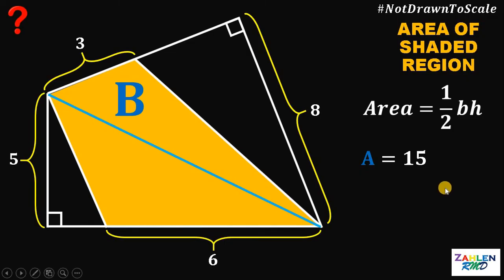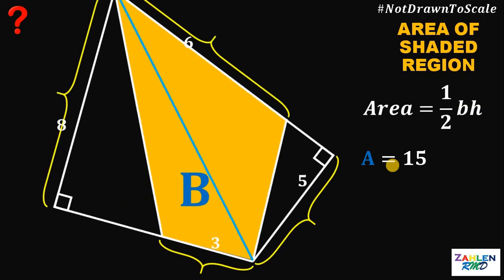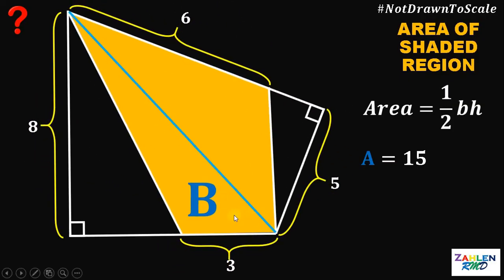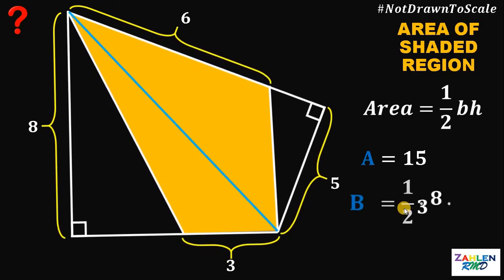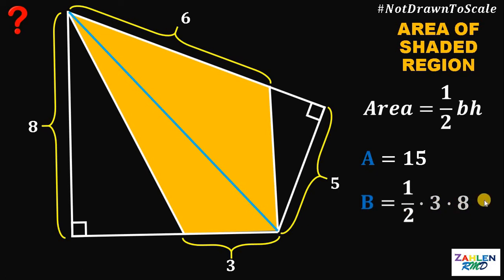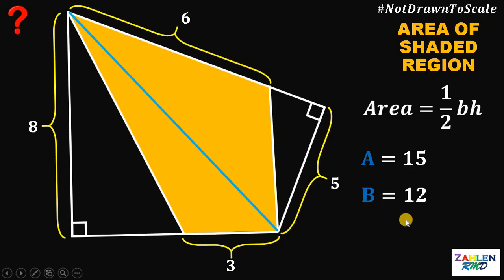Now, how about the area of region B? If we rotate the figure, we can see that the base of this triangle must be equal to 3, and its height must be equal to 8. Therefore, the area of region B must be equal to 1 half times 3 times 8. Now, 3 times 8 is 24, divided by 2 gives us 12. So the area of region B must be equal to 12 square units.